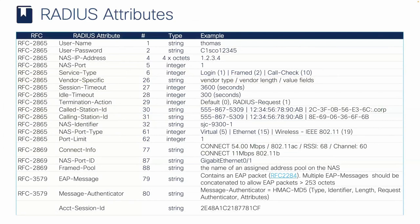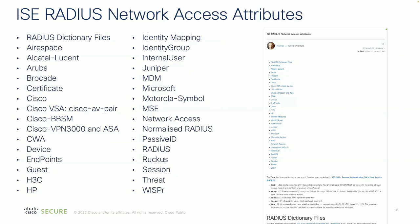I keep talking about these attributes, so I wanted to give you a consolidated list of the most popular ones you're going to be using, and which RFCs they're located in, in case you want to refer to them. I also tried to give you some examples because this is exactly what we're going to be doing today — using a lot of these values over and over again. For reference, I've also put these on a document called 'ICE RADIUS Network Access Attributes' on the Cisco Community. If you just search on this, it should come up near the top of any search engine.